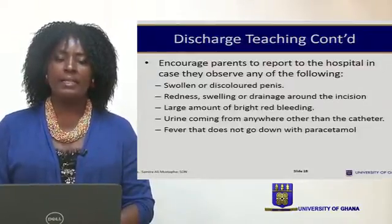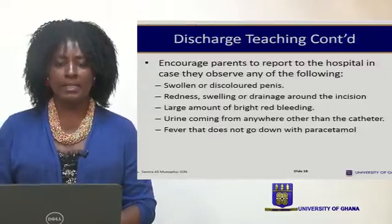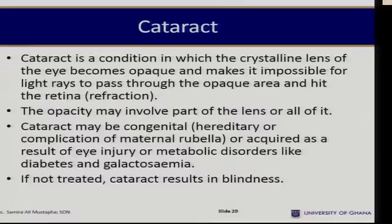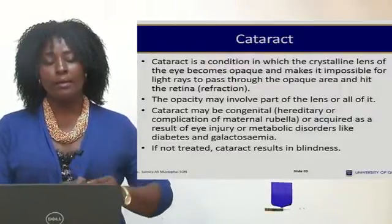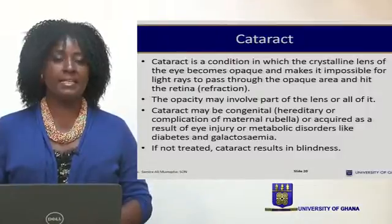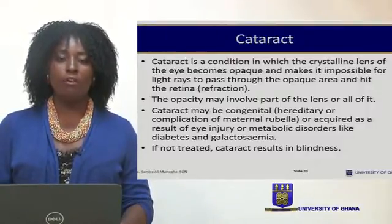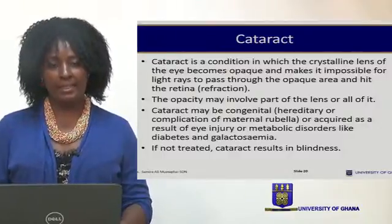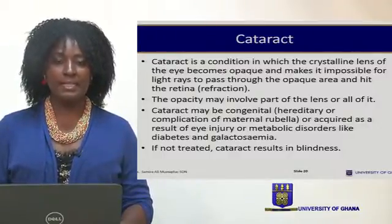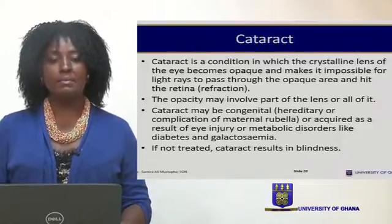Now we will look at cataracts. Cataracts is a condition in which there is crystallization of the lens of the eye, causing it to become opaque, making it very difficult for light to penetrate through. This affects vision because light cannot penetrate the opaque lens to reach the retina. The opacity may involve part of the lens or the total lens, and the extent varies.